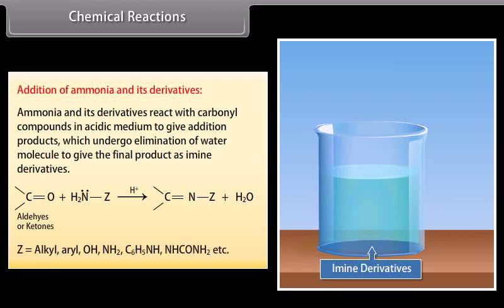Z can be alkyl, aryl, OH, NH2, C6H5NH, NHCONH2, etc.